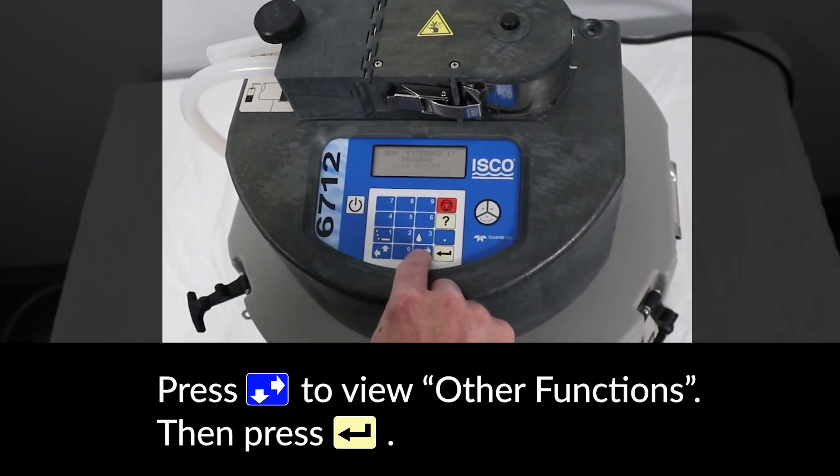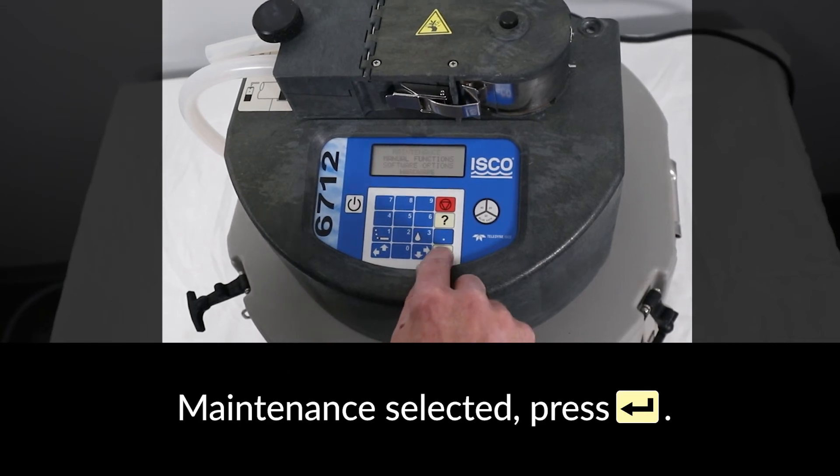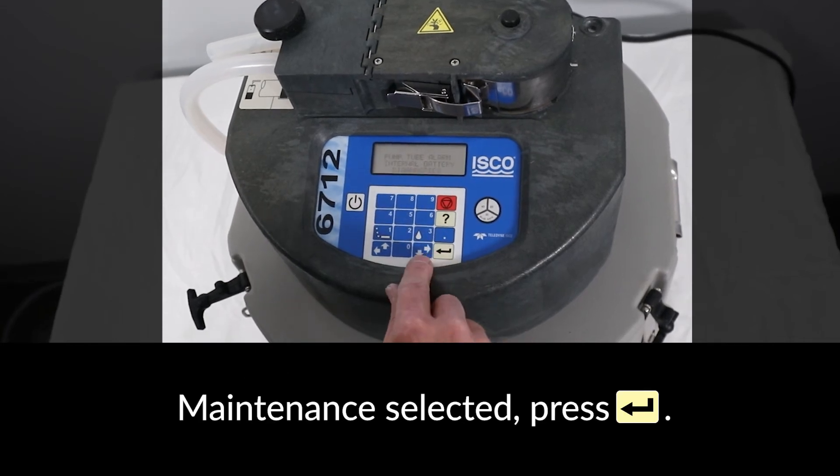To reset the tubing counter, press the down arrow key to get other functions blinking and press enter. With maintenance selected, press enter.